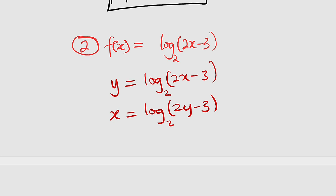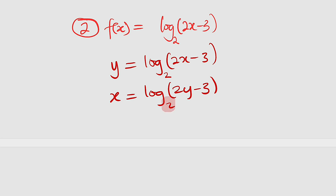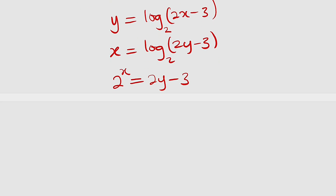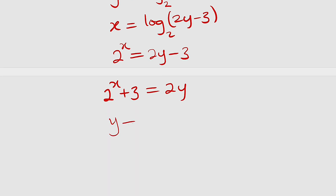Now we are going to solve for y. Remember that our base raised to the power of x will give us 2y minus 3. So we say that 2 raised to the power of x is equal to 2y minus 3. Now we add 3 to both sides, so 2 raised to the power of x plus 3 will be equal to 2y. And lastly, we divide both sides by the coefficient of y, which is 2. So y will be equal to 2 raised to the power of x plus 3, all divided by 2.